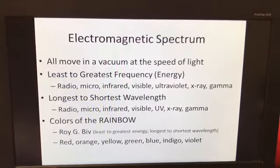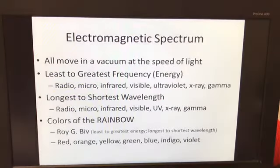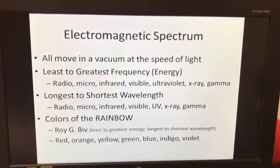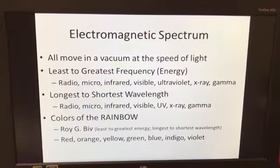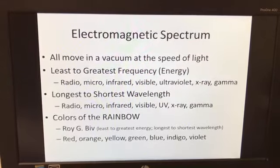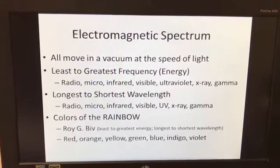Electromagnetic spectrum. All right, know the speed of light in a vacuum, 3.0 times 10 to the 8 meters per second. All right, from least to greatest frequency, from longest to shortest wavelength, and the colors of the rainbow in order. And there you go.